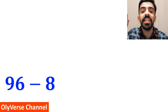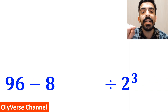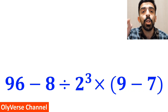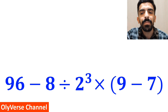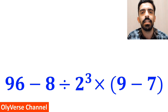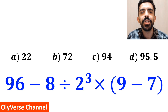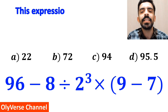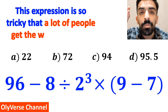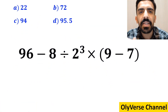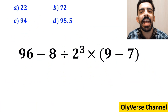What is the value of the expression 96 minus 8 divided by 2 to the power of 3 multiplied by open parenthesis 9 minus 7 close parenthesis? Which option do you think is the correct answer to this question? This expression is so tricky that a lot of people get the wrong answer. Let's dive in and break it down step by step together.